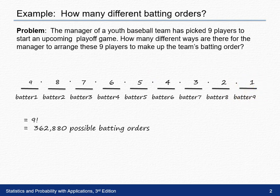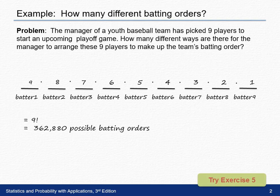What this works out to be is what we call nine factorial, telling us that there are over 300,000 different possible batting orders when you have nine players on a team. What we used here was the factorial, which means nine times eight times seven times six, all the way down to times one. If you'd like more practice with factorials and permutations, please try exercise five.